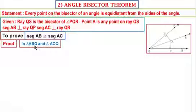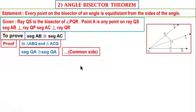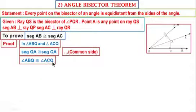In triangle ABQ and triangle ACQ: Segment QA is congruent to segment QA — common side. Angle ABQ is congruent to angle ACQ — each is a right angle.